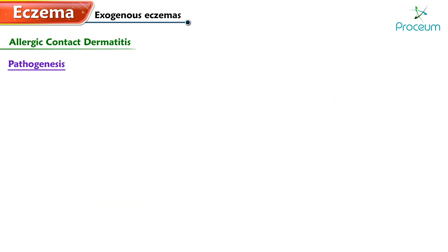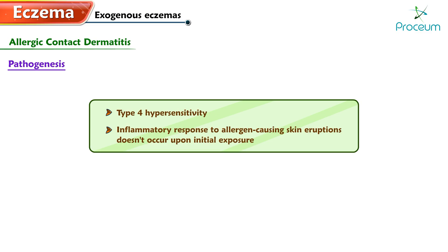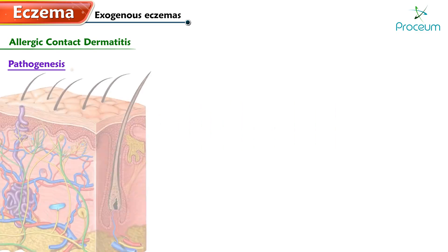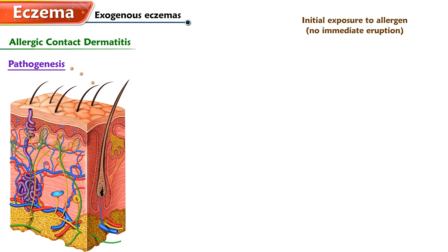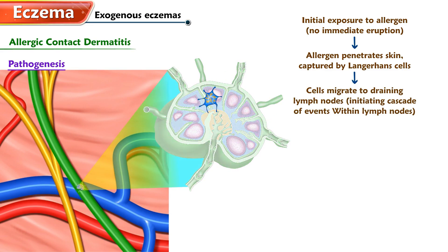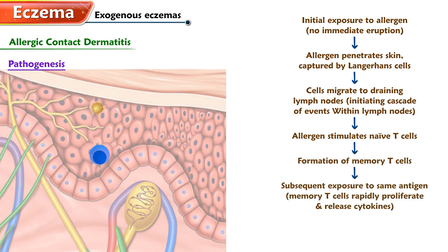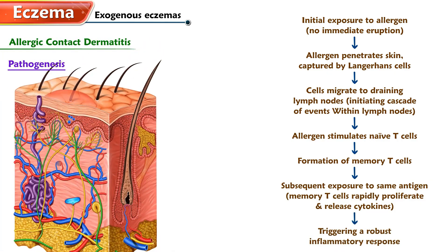Allergic contact dermatitis is a type 4 hypersensitivity. An inflammatory response to allergen-causing skin eruptions doesn't occur upon initial exposure. Instead, the allergen penetrates the skin and is captured by the Langerhans cells, which migrate to the draining lymph nodes, initiating a cascade of events. Within the lymph nodes, the allergen stimulates naive T cells, leading to the formation of memory T cells. Upon subsequent exposure, these memory T cells rapidly proliferate and release cytokines, triggering a robust inflammatory response that manifests clinically as eczema.